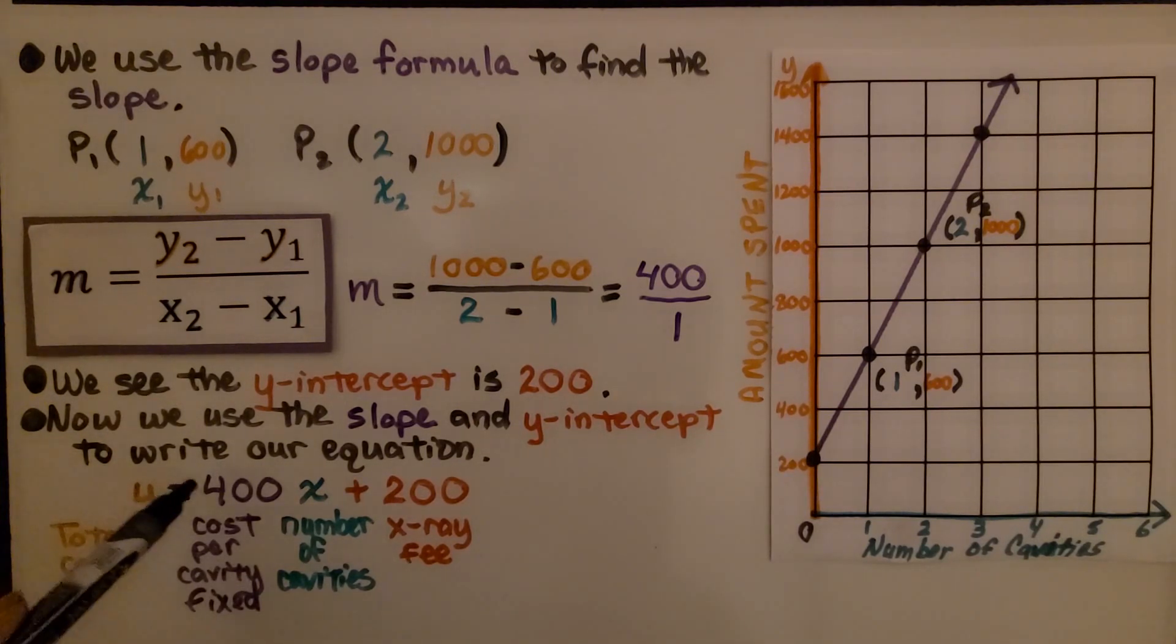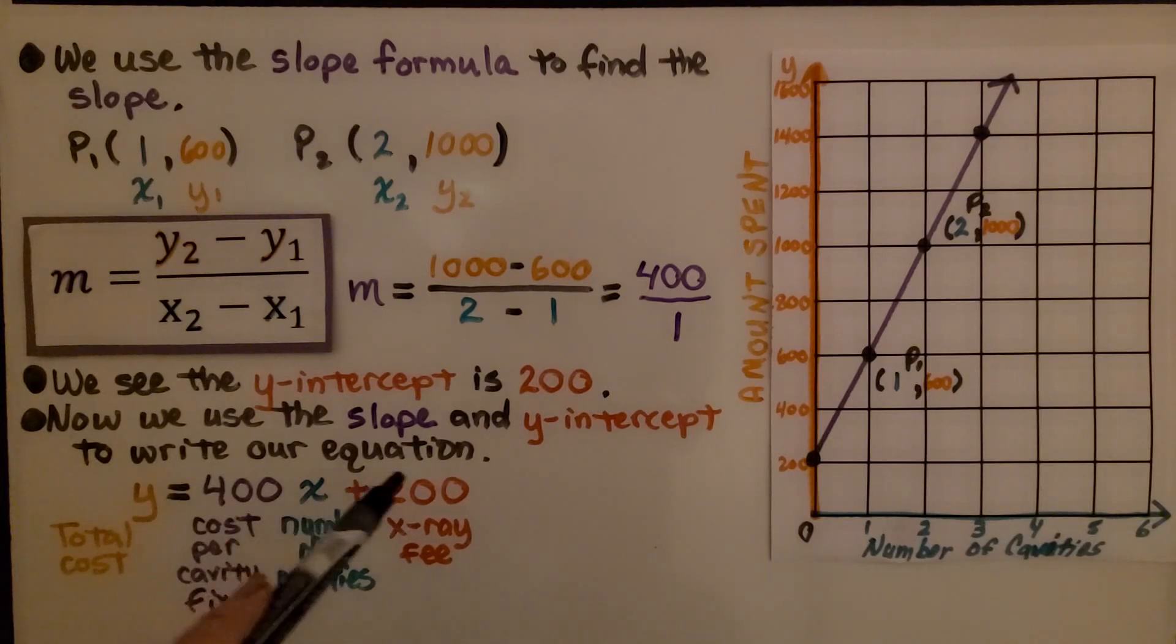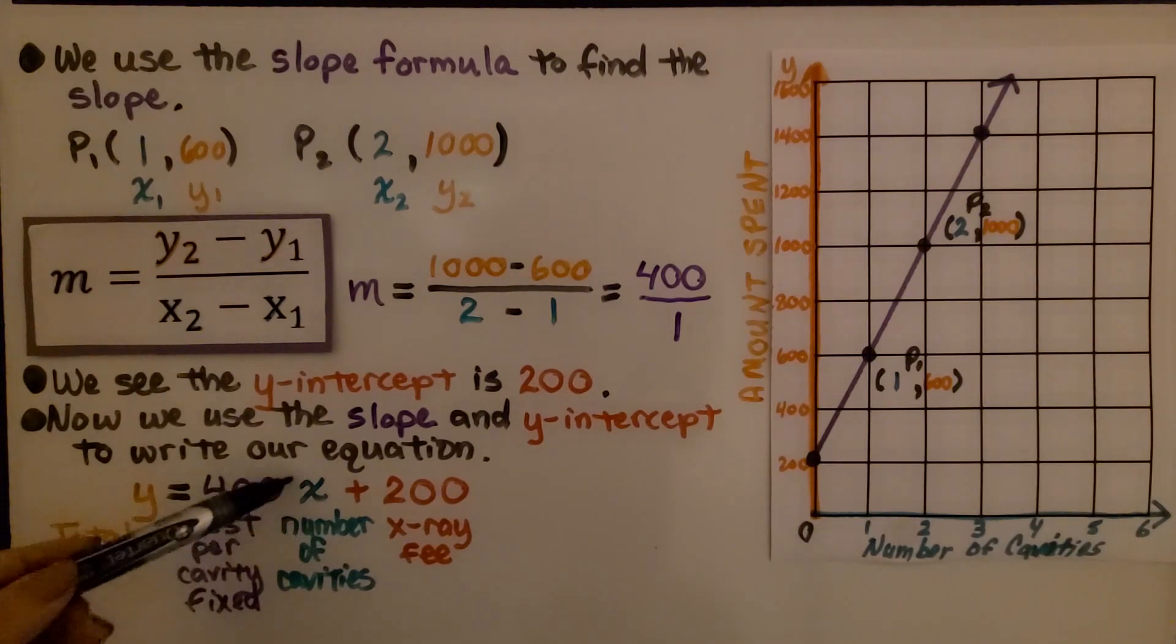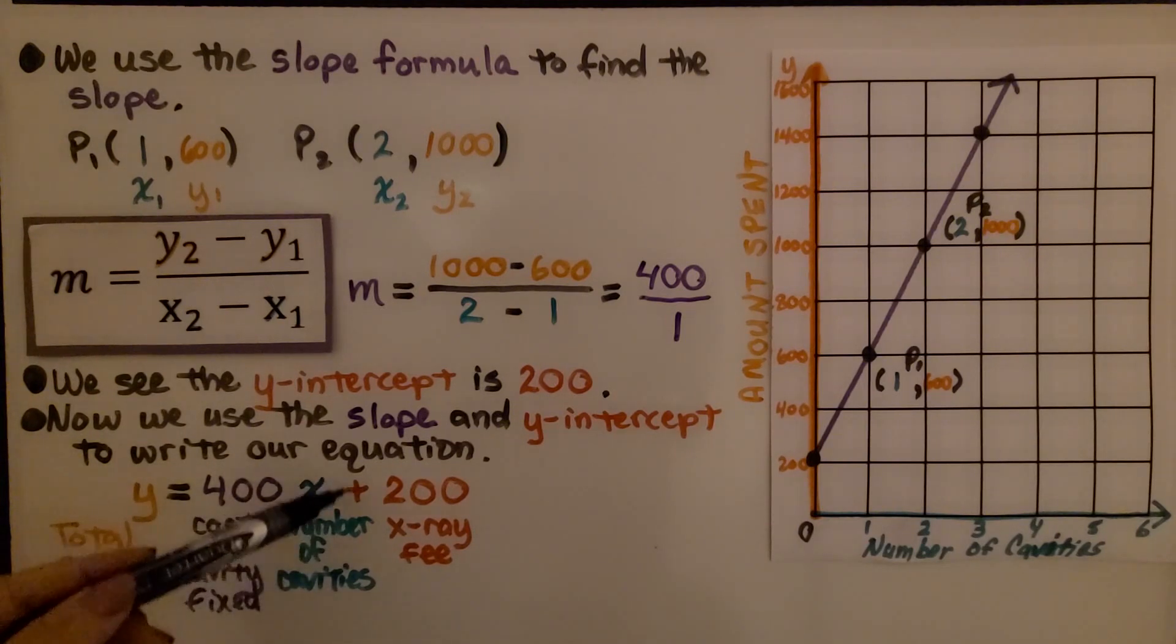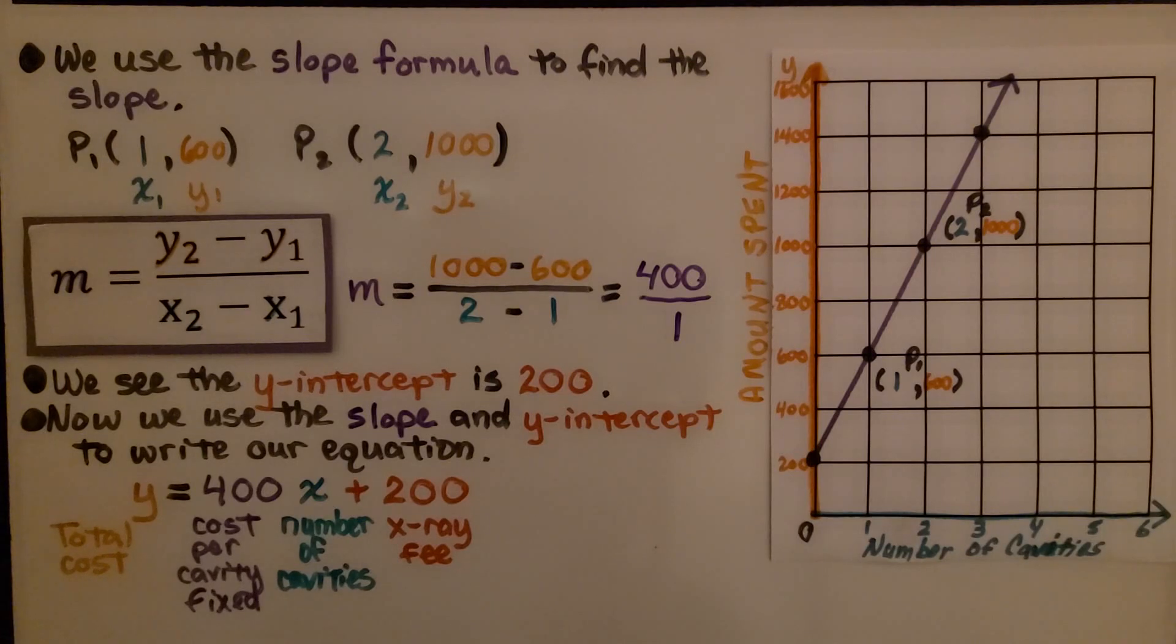We have y equals 400x plus 200. So the total cost is $400 for the cost per each cavity that's fixed, multiplied by x, the number of cavities, plus $200, that x-ray fee. Now the average cost per cavity gets cheaper, because the x-ray fee is only charged once.